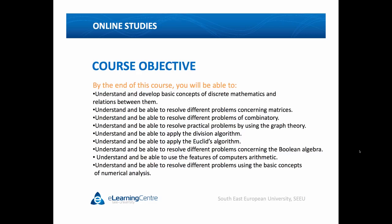What are the course objectives? By the end of this course, you will be able to understand and develop basic concepts of discrete mathematics and relations between them. Then, understand and be able to resolve different problems concerning matrices. When I say problems concerning matrices, I mean operations with matrices — addition and subtraction, as well as matrix multiplication, and multiplication of a matrix by a scalar. Then, understand and be able to resolve different problems of combinatorics.